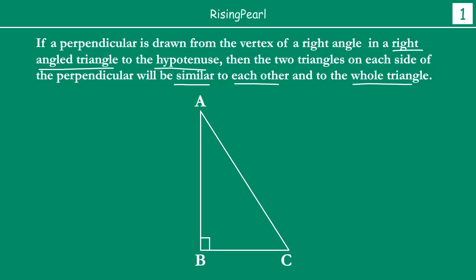Let's draw a simple right angled triangle. Here I have drawn a right angled triangle ABC. What is a right angled triangle? In any triangle, if one angle — angle A, B, or C — is 90 degrees, that triangle is called a right angled triangle. In this triangle ABC, we have angle B as 90 degrees.